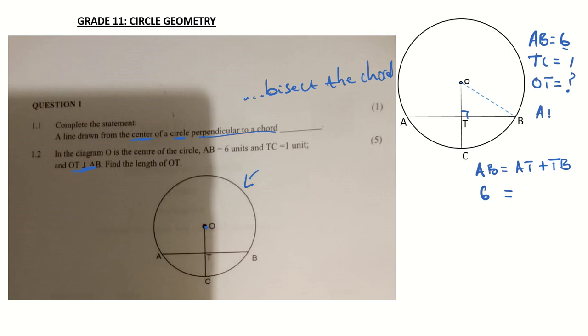AB is equal to 6, but we also know that AT is equal to TB. So we can substitute: 2AT equals 6, so AT will be equal to 3. So both AT and TB are equal to 3.